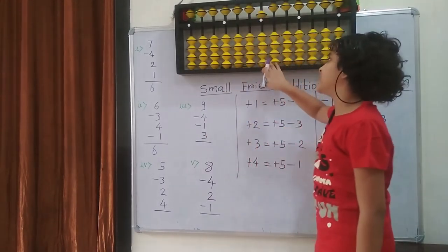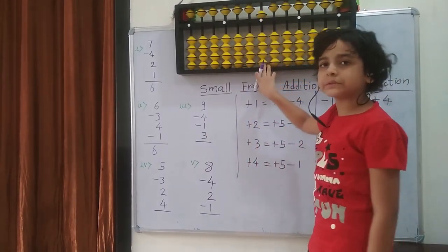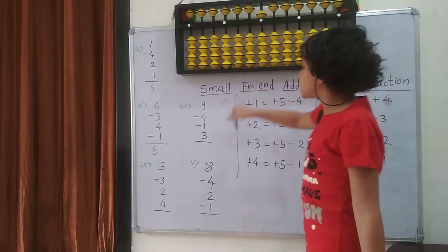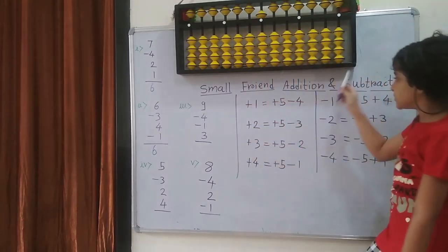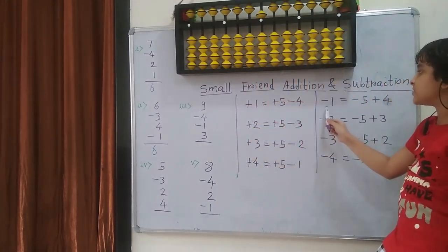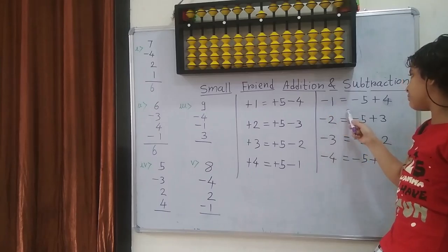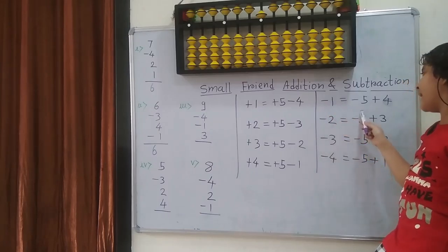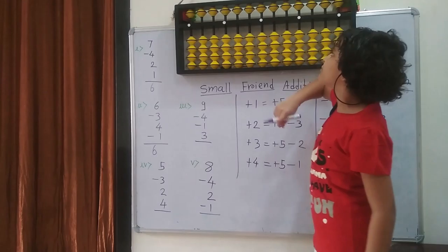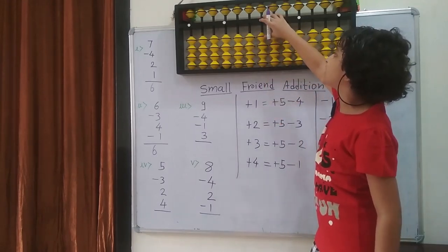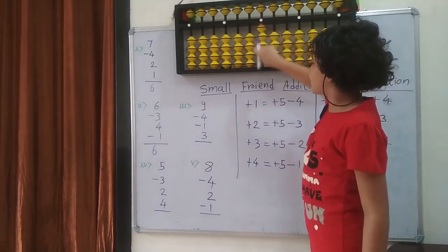Then I am going to minus 1. We cannot, because we don't have any bits — so this is subtraction. We are going to use the subtraction formula, which is: minus 1 equals to minus the 5 plus the 1. So minus the 5 and plus the 1. So 1, 2, 3, 4.